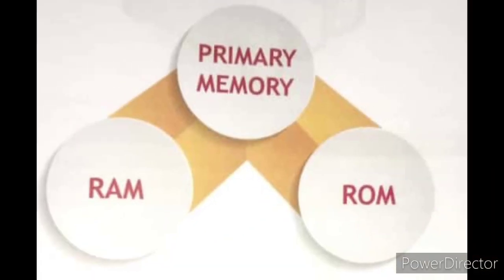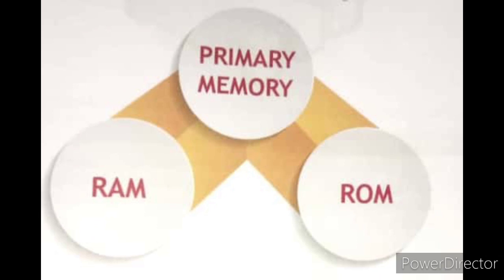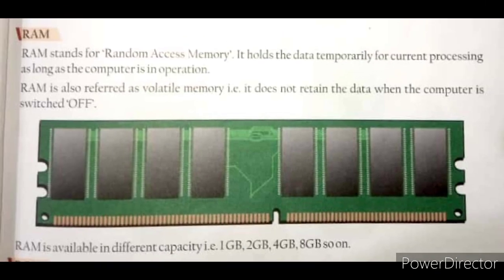Primary memory can be classified into two main categories: RAM and ROM. RAM stands for Random Access Memory. It holds the data temporarily for current processing as long as the computer is in operation. RAM is also referred to as volatile memory — that is, it does not retain the data when the computer is switched off. RAM is available in different capacities: 1 GB, 2 GB, 4 GB, 8 GB, and so on.